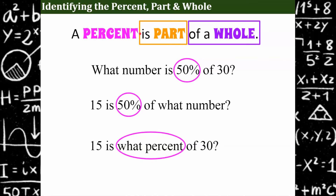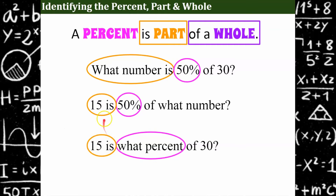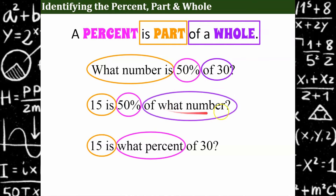We're looking for the keyword 'is' to identify the part. In the first question, 'what number is' — we don't know, that's our x. In the second, '15 is' — 15 is the part. So those are the parts. Now we're looking for 'of' to find the whole. 'Of 30,' 'of what number' — that would be x — and 'of 30.' So in the first statement, I'm missing the part. In the second question, I'm missing the whole. In the third question, I'm missing the percent.